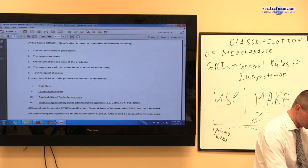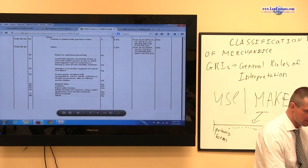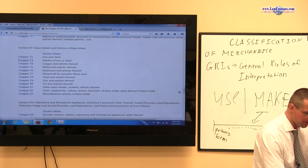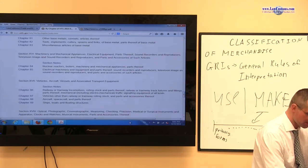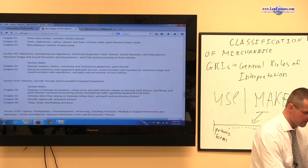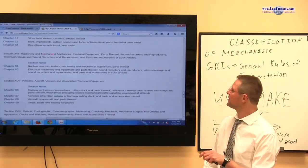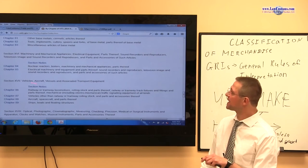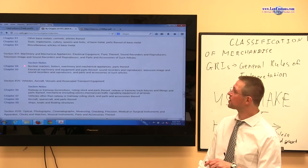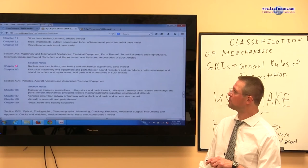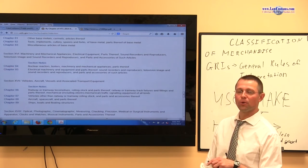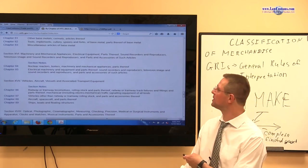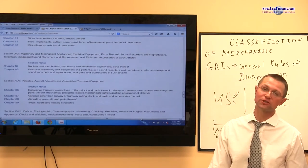High-tech chapters are chapters 84 and 85, very heavily dominated with technology. You have computers, for example, classifiable in chapter 84, but TV monitors classifiable in chapter 85. Why are they not classified in one chapter, I don't know. Classifying in the same section makes sense.